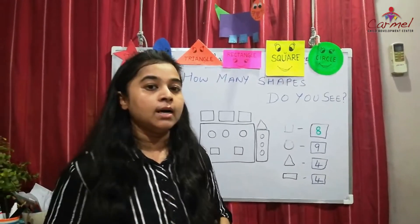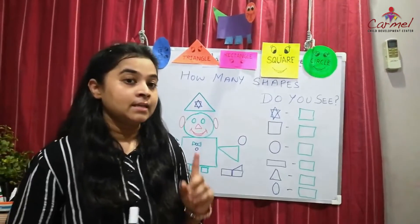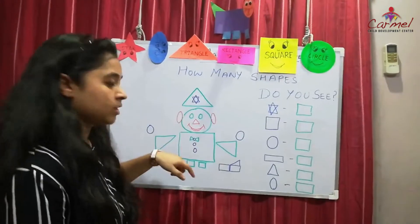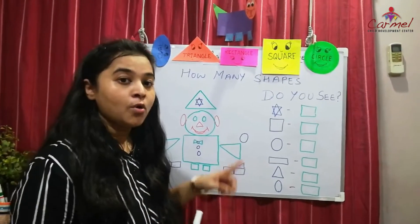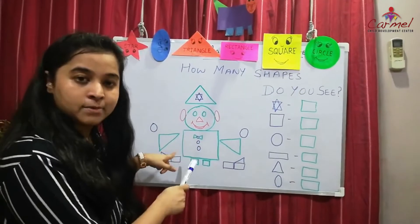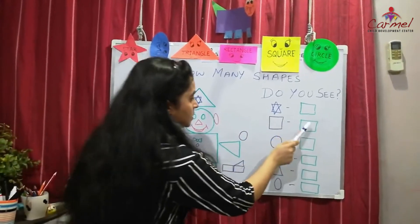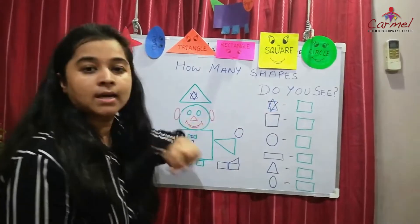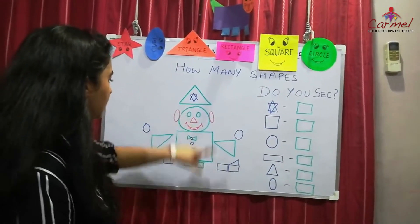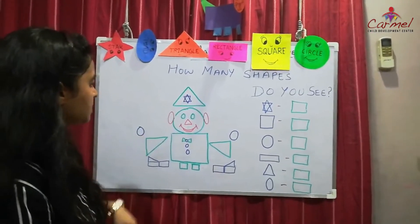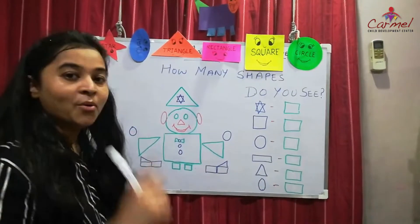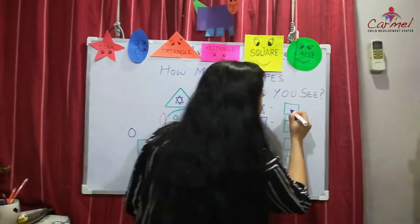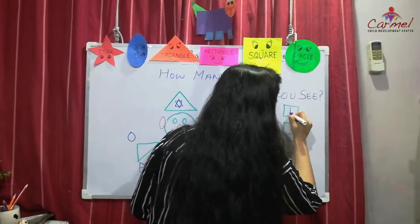Now let's move on to the next activity. I have drawn another picture using shapes. You all have to find out how many shapes there are and write it in the box. First, how many stars are there in this picture? There is 1 star.